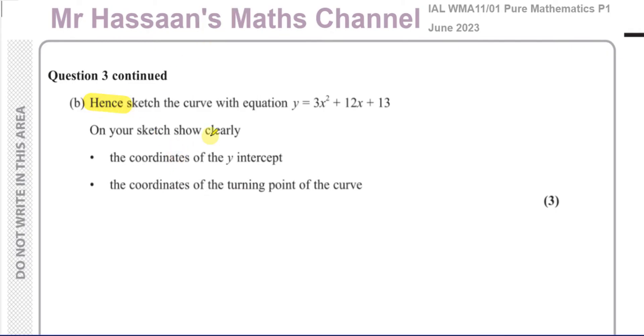So I'm going to take my expression that we got, the same expression, except we completed the square, and it became y = 3(x + 2)² + 1. So we have to use this in order to sketch this curve with the equation.